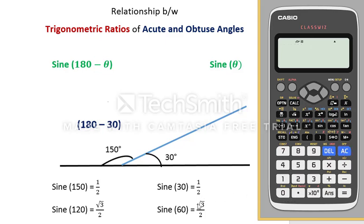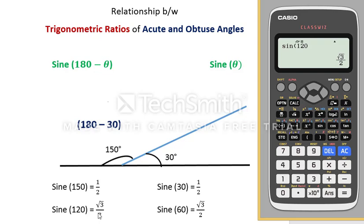Take a second example. Sine 60 is √3/2. And sine 120 — obtained by subtracting 60 from 180 — is also √3/2. Once again we have seen that the sine of an acute and obtuse angle have the same ratio in the sine trigonometric ratio.